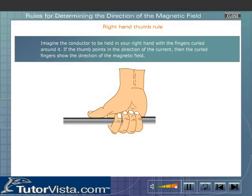Right-hand thumb rule: Imagine the conductor to be held in your right hand with the fingers curled around it. If the thumb points in the direction of the current, then the curled fingers show the direction of the magnetic field.